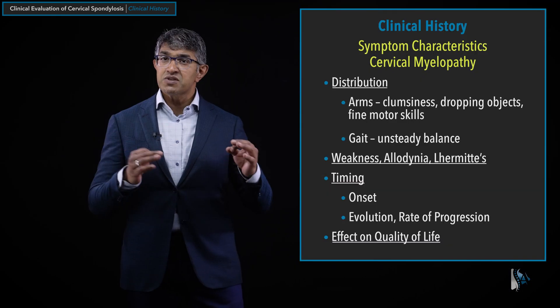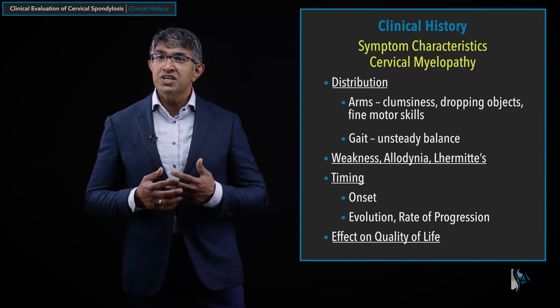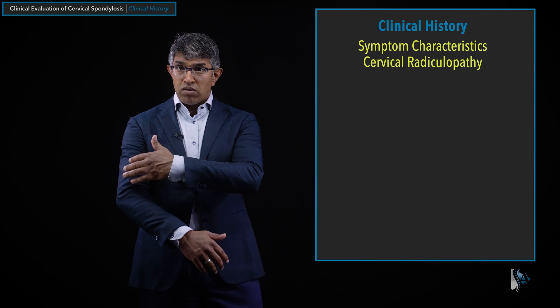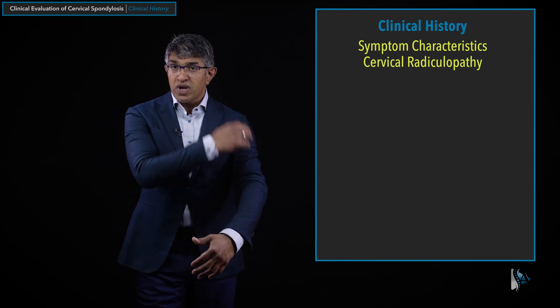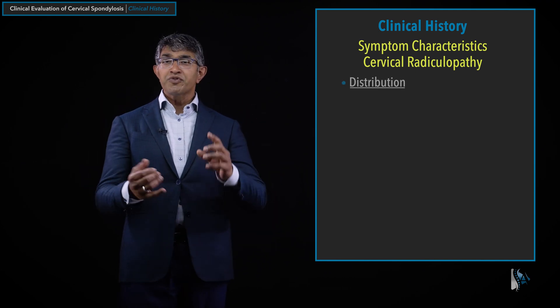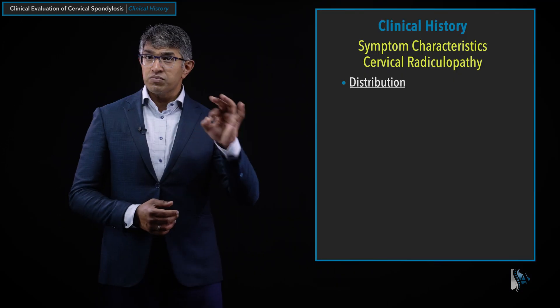After covering myelopathy, I change gears and ask about cervical radiculopathy — symptoms that often affect the arm. Cervical radiculopathy typically causes symptoms that radiate into the arm. I ask about the distribution specifically: if people are having pain, numbness, tingling, or weakness, where does it go? Is it down the back of the arm, the side, down to the thumb — which fingers does it involve? We call that distribution.